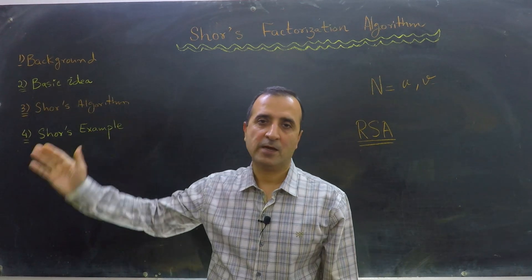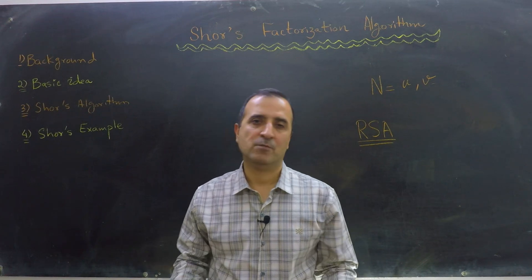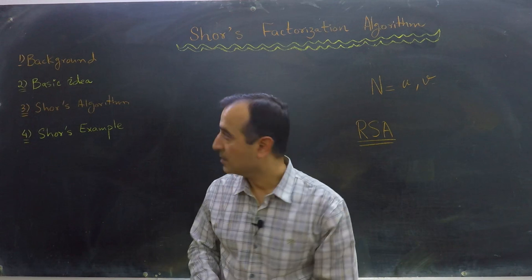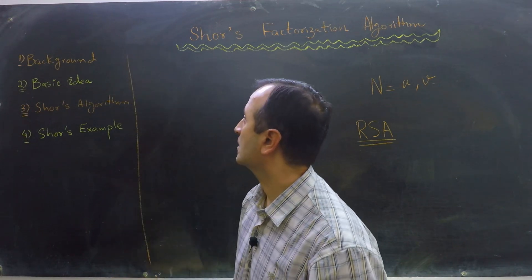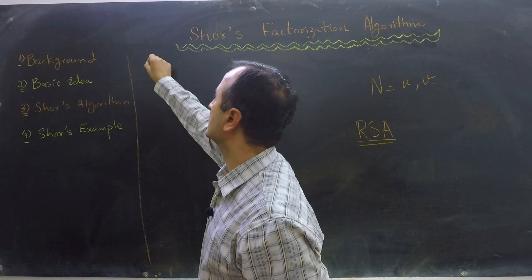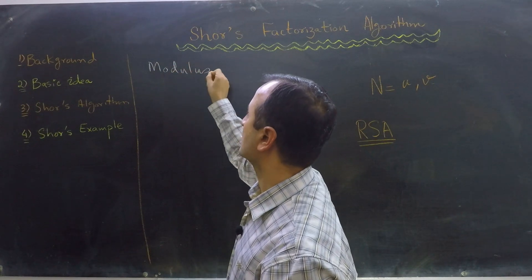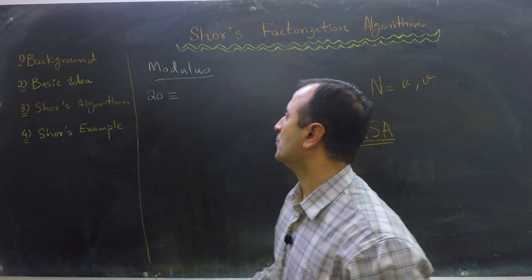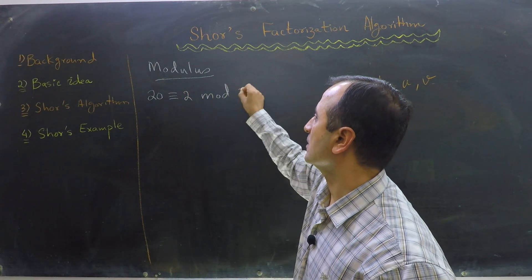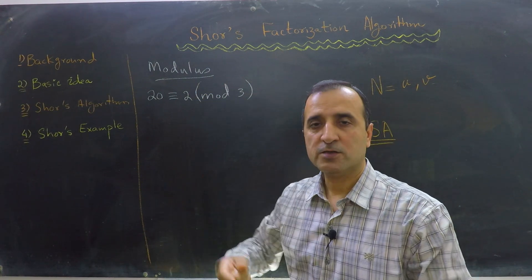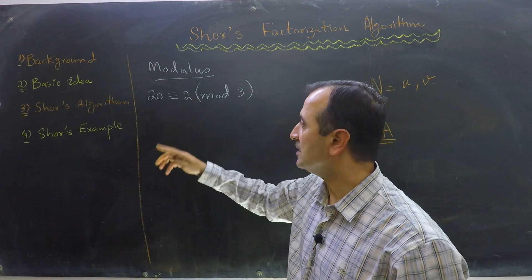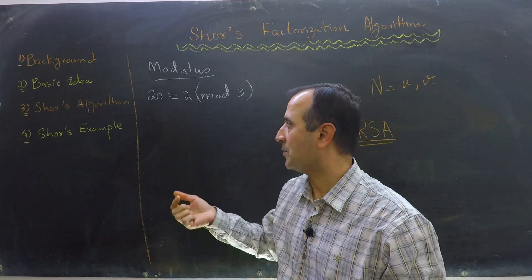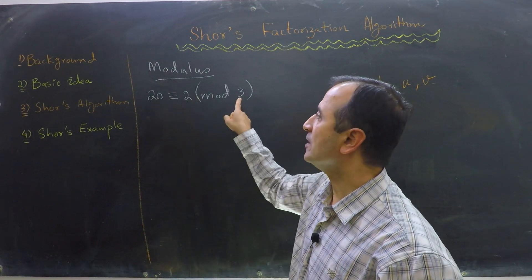I will start with the mathematical background needed to understand Shor's algorithm — this is basic number theory. We must know about modular arithmetic. For example, 20 is congruent to 2 in mod 3. Basically we are saying that in the universe of mod 3, 20 is the same as 2. It is because when we divide 20 by 3, our remainder is 2. So sometimes we call modular arithmetic 'remainder arithmetic' because we're talking about remainders.